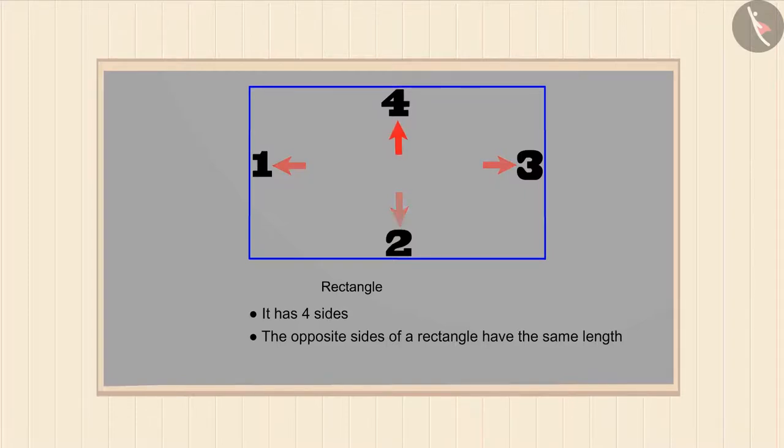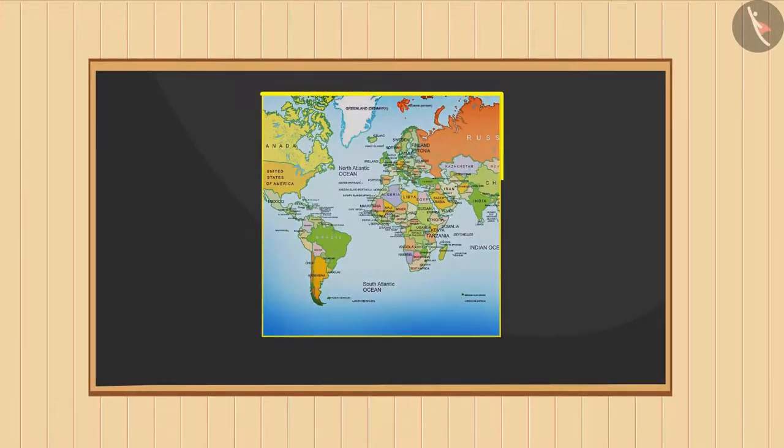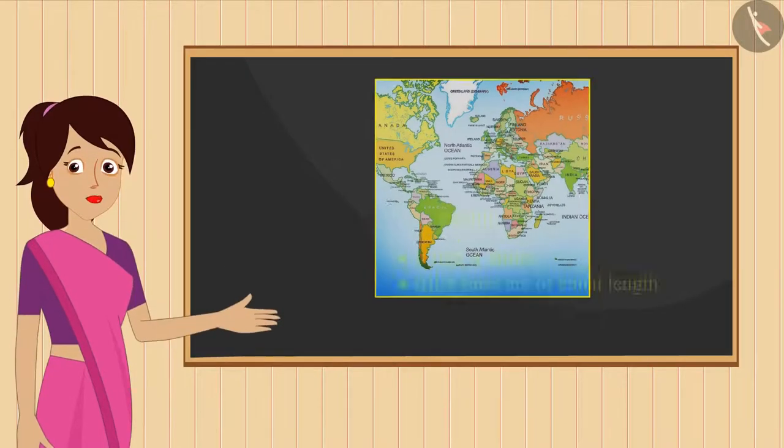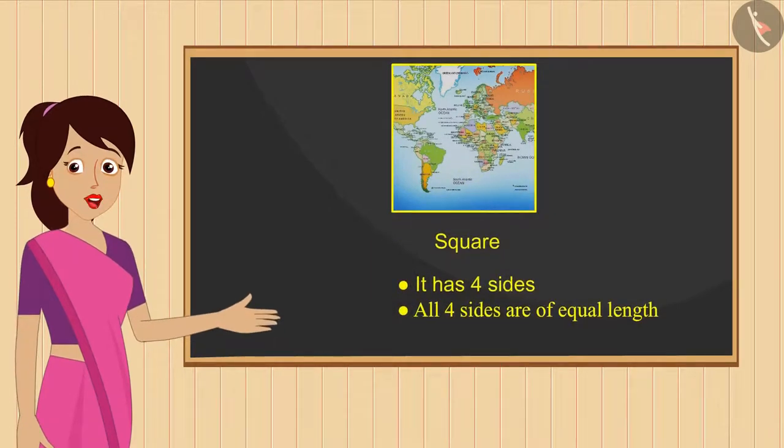Now tell me, which shape shall we get by tracing this map? This is a square. Very good, Ravi! A square is a shape that has four sides and all four sides are of same length.